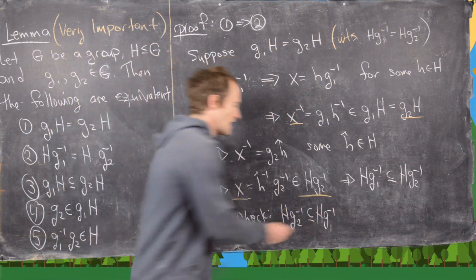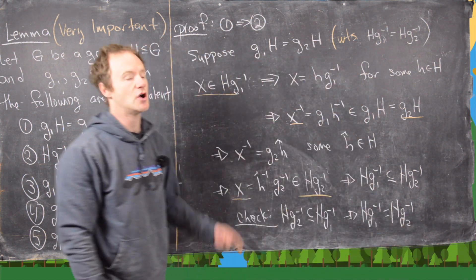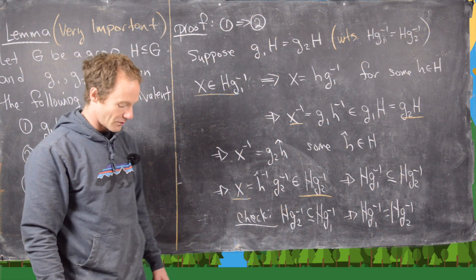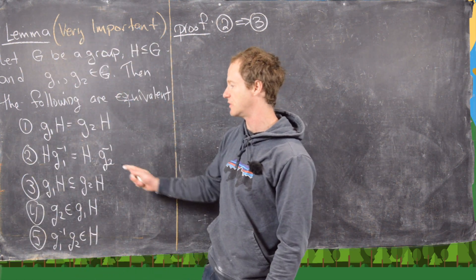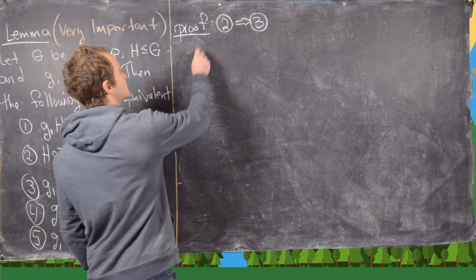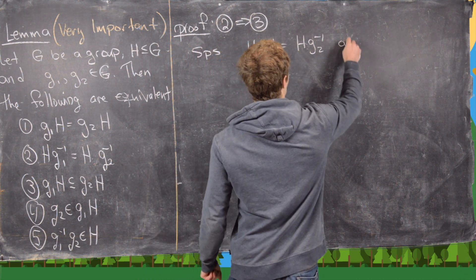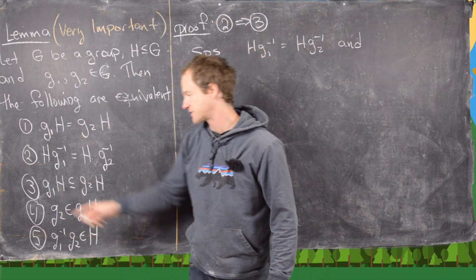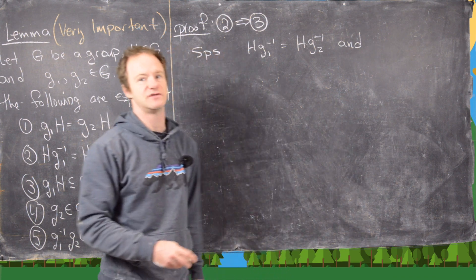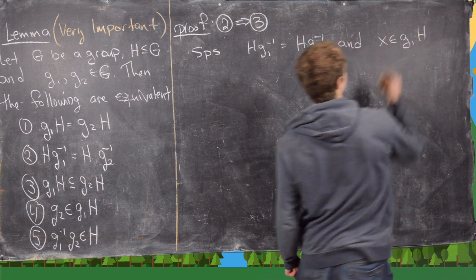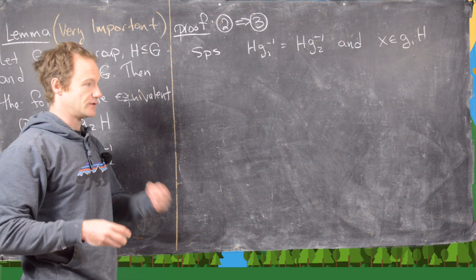By double set inclusion, those two right cosets are equal: Hg1⁻¹ equals Hg2⁻¹, finishing the proof from one to two. Next we'll look at two to three — we assume statement two is true and prove statement three. Suppose Hg1⁻¹ equals Hg2⁻¹. We want to take an x from g1H and show that x is in g2H, i.e., that g1H is a subset of g2H. The strategy is to push everything to elements rather than cosets and do the calculations there.